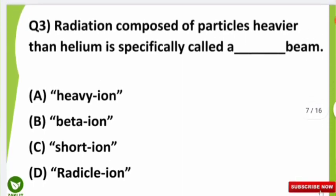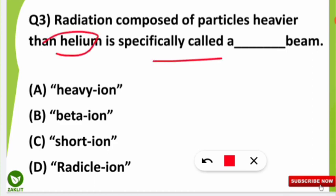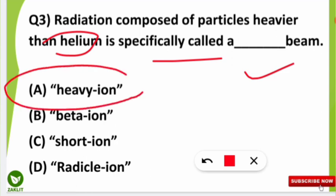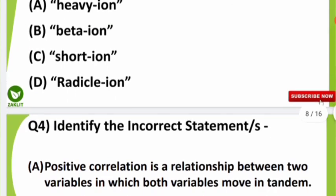The third question was: radiation composed of particles heavier than helium is specifically called what kind of beam? The correct answer is that these are called heavy ion beams. When radiation used in nuclear reactors is heavier than the helium particle, those beams are specifically called heavy ion beams.